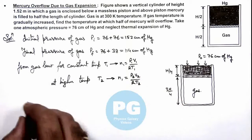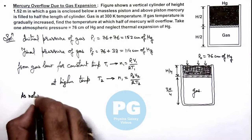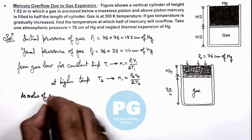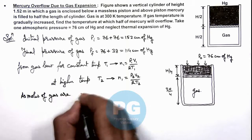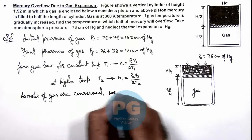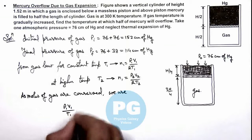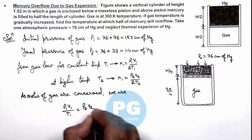So for same number of moles, we can write, as moles of gas are conserved, P1 V1 by T1 is equal to P2 V2 by T2.